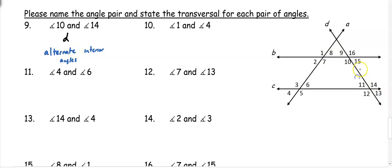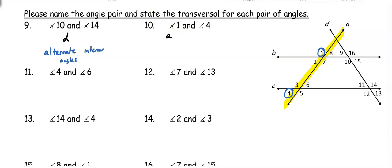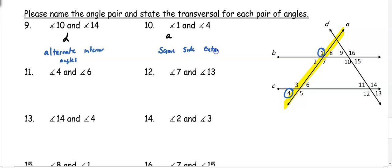Number 10: angle 1 and angle 4. The line that angles 1 and 4 share in common is line A, so line A is our transversal. When I look at angles 4 and 1, they're above and below their respective lines, meaning they're on the outside, and they're on the same side of the transversal — so these are same side exterior angles.